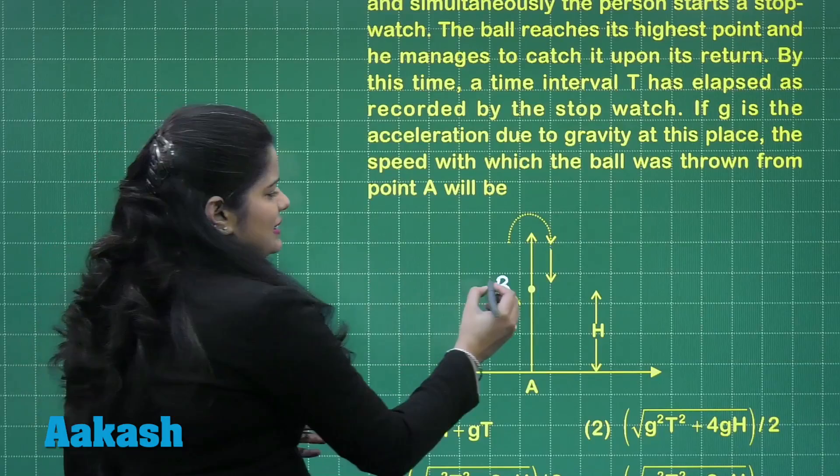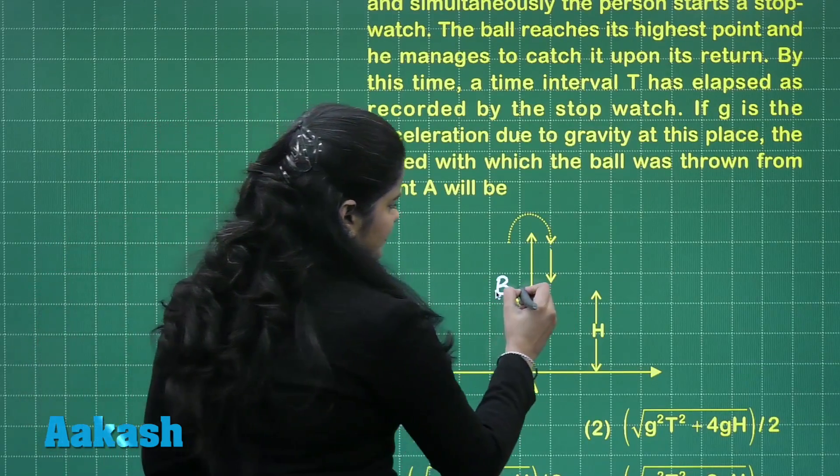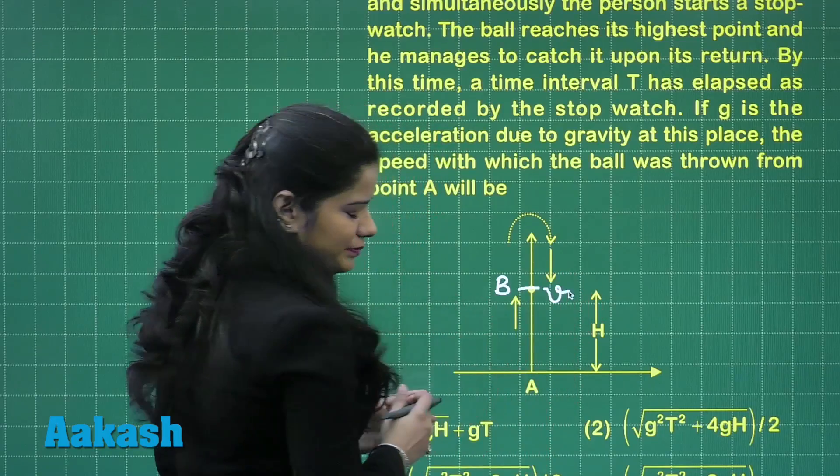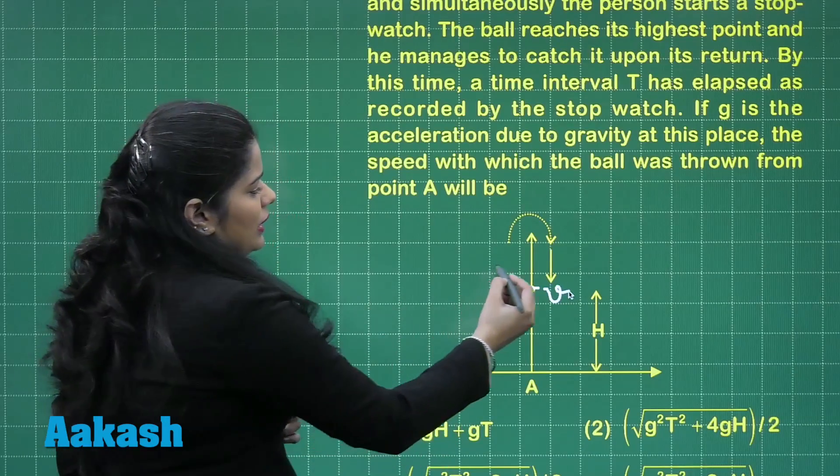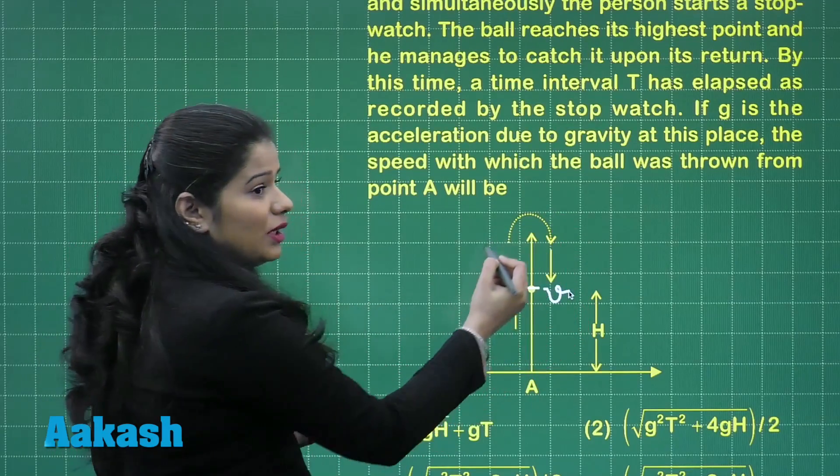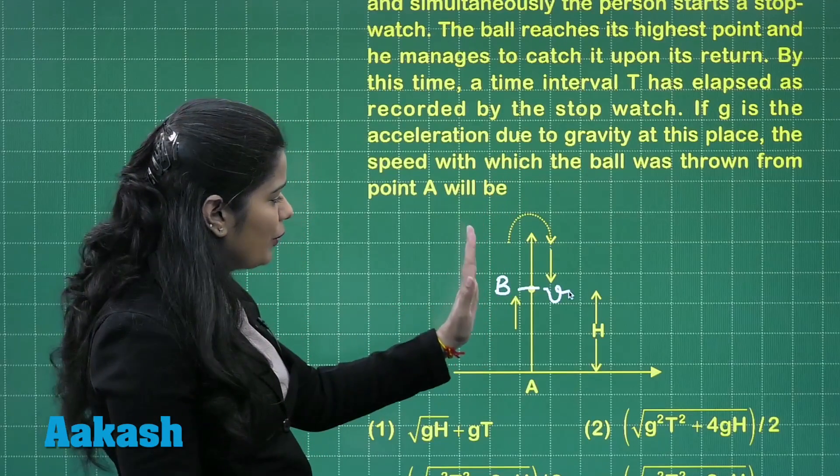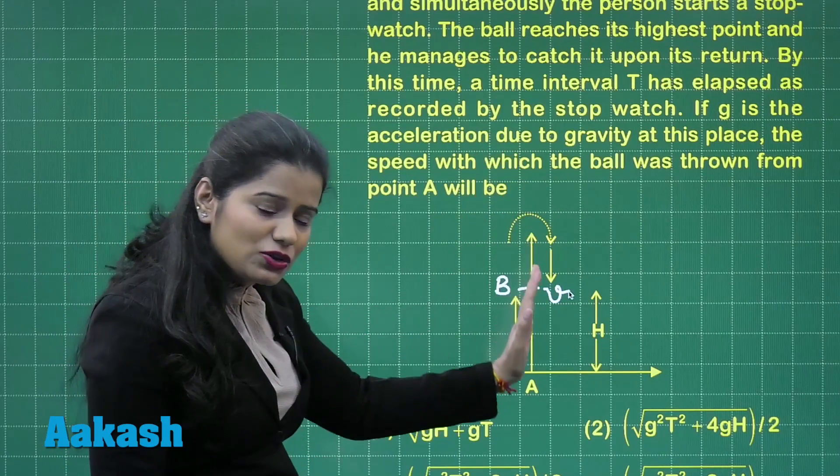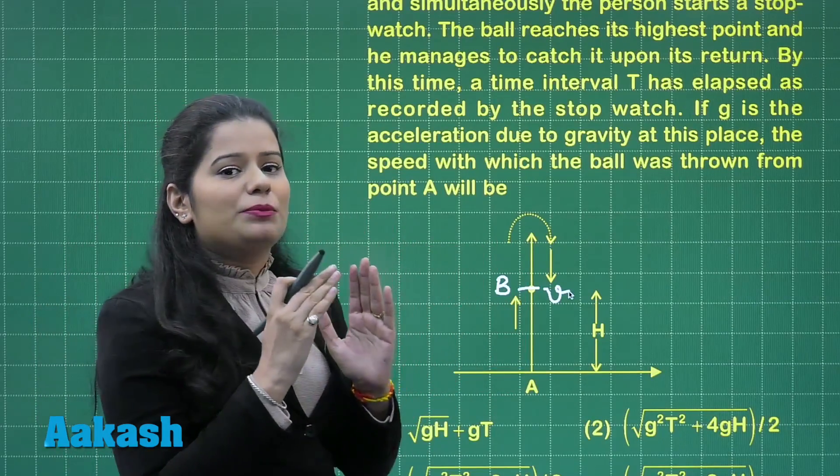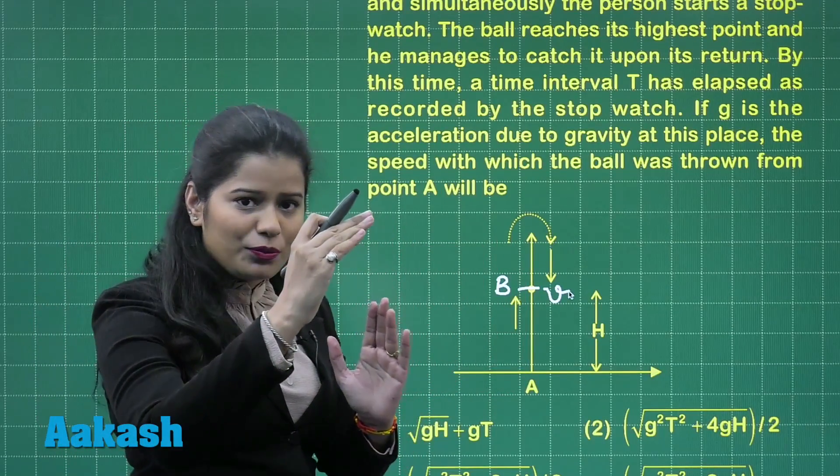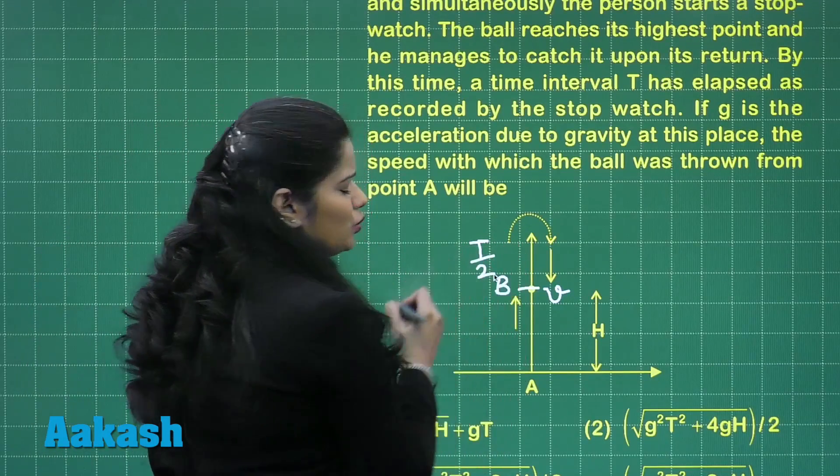So if I just take the velocity here that is at point B to be V. Can I calculate this velocity? Yeah, we can. Because we know the total time taken by the ball in going to its highest point from point B and coming back to point B is T. So what is going to be the time taken by the ball to go to its highest point from this point B? It is going to be T by 2.